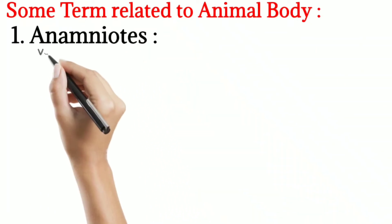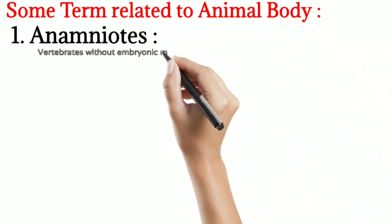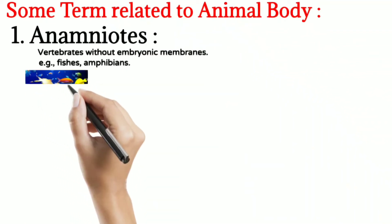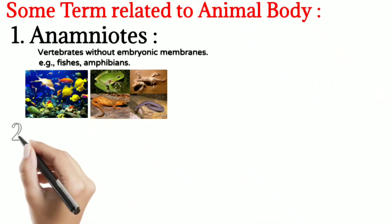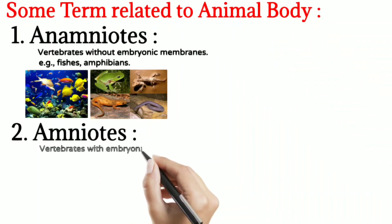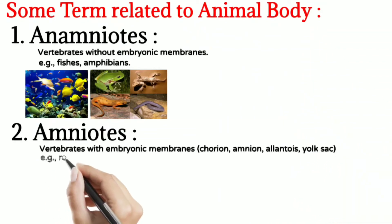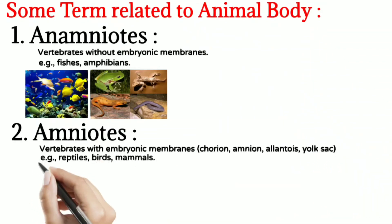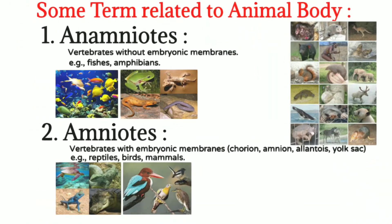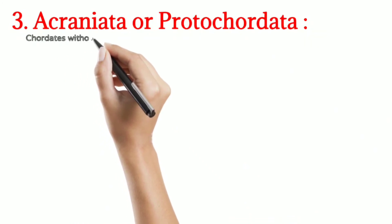Some terms are related to animal bodies. First, Anamniota — these are vertebrates which do not have embryonic membranes. Examples include fishes and amphibians. The second group is Amniota — these are organisms on which embryonic membranes can be seen. The embryonic membranes are Chorion, Amnion, Allantois, and Yolk sac. Reptiles, birds, and mammals are amniotes — we as mammals are amniotes.